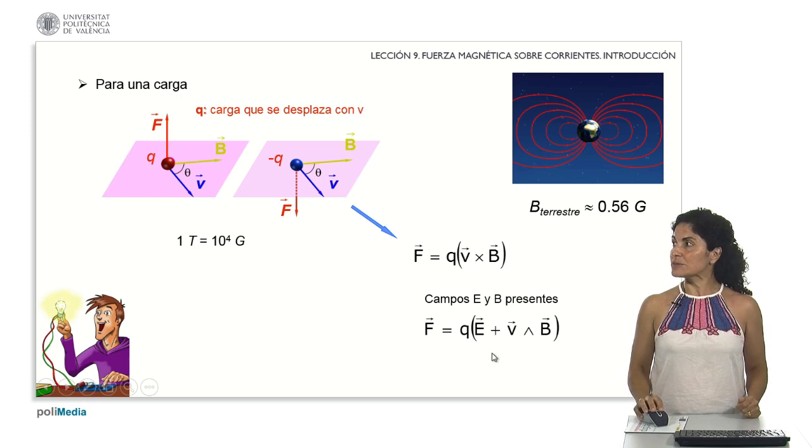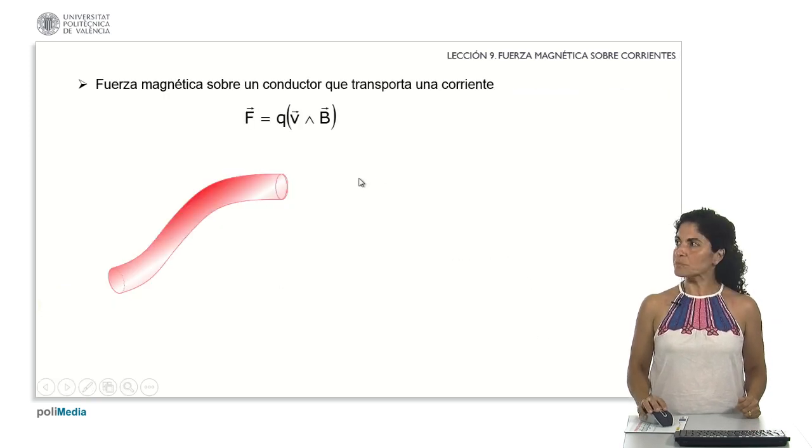In instances where both electric and magnetic fields coexist within a given space, considering both contributions, electric and magnetic, is necessary. Therefore, from the previous expression that we already know and we have worked very well in lesson 8, we consider a conductor through which we are going to establish that an electric current circulates.